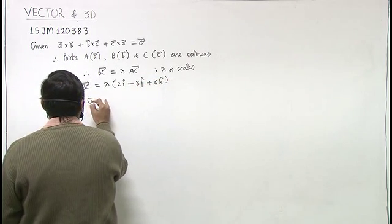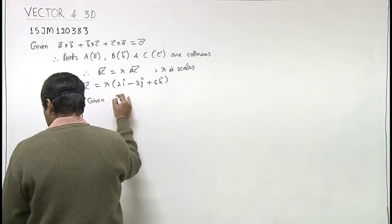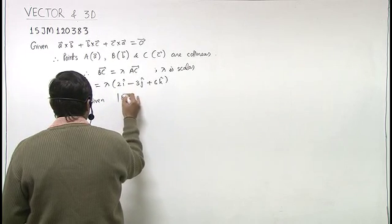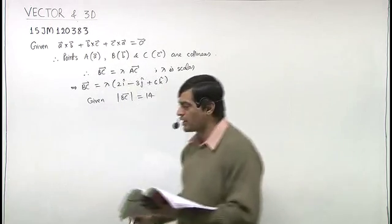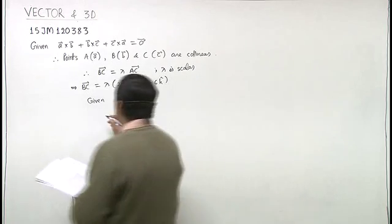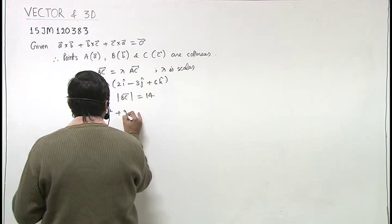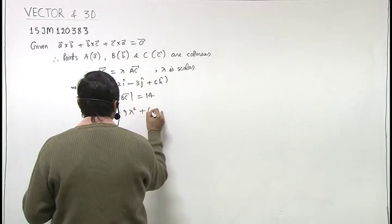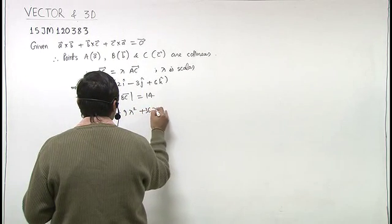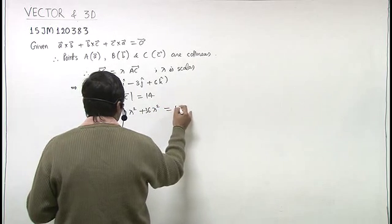Now we are given that magnitude of BC is 14. That means 4 lambda square plus 9 lambda square plus 36 lambda square equals 14 square.